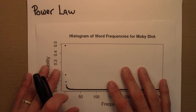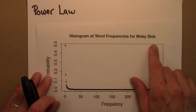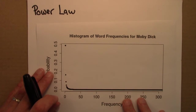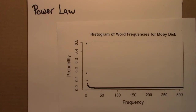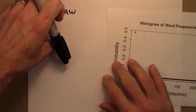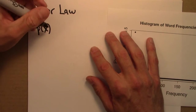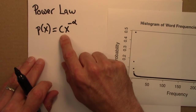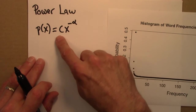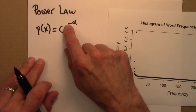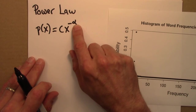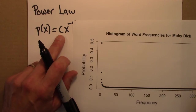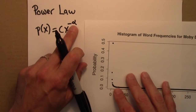We've seen our first example of a power law — the word frequencies for the novel Moby Dick. A power law says the probability is given by a constant c times x to the minus alpha. This is the more common way of writing it, with the minus sign explicit. For the word frequency example, the constant was about 0.59 and alpha was about 1.95.